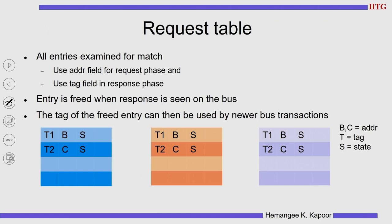Here, all entries are to be examined for the match. I am going to compare all these tables — which you can see are the request tables with three different processors: the blue, the orange, and the purple processor. You can see here, this is the tag. Suppose I use T1 as the tag, B is the address, and this is the state of the block in the local processor. I am interested in the tag and the address. Whenever a request comes, it gets a tag and is associated with an address. I have two requests already entered, and you can see T1 is occupying the first row in every table, T2 is occupying the second row in every table.